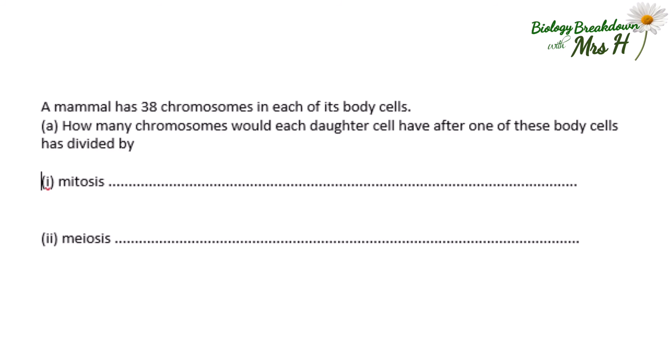A mammal has 38 chromosomes in each of its body cells. How many chromosomes would each daughter cell have after one of these body cells has divided by mitosis? As they will be genetically identical to the parent cell they will have 38 chromosomes. But if it's meiosis, because we are moving to half the genetic information — half the number of chromosomes — so half of 38 is 19.